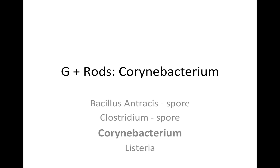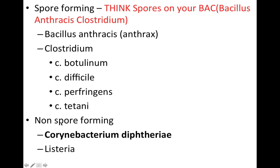Today we're going to be continuing our series on the gram-positive rods, and this video is going to focus on Corynebacterium. We've already talked about Bacillus anthracis and Clostridium, so if you haven't seen those videos, go back and watch those. Of these gram-positive rods, Corynebacterium and Listeria are going to be the non-spore forming. You can see that on this slide.